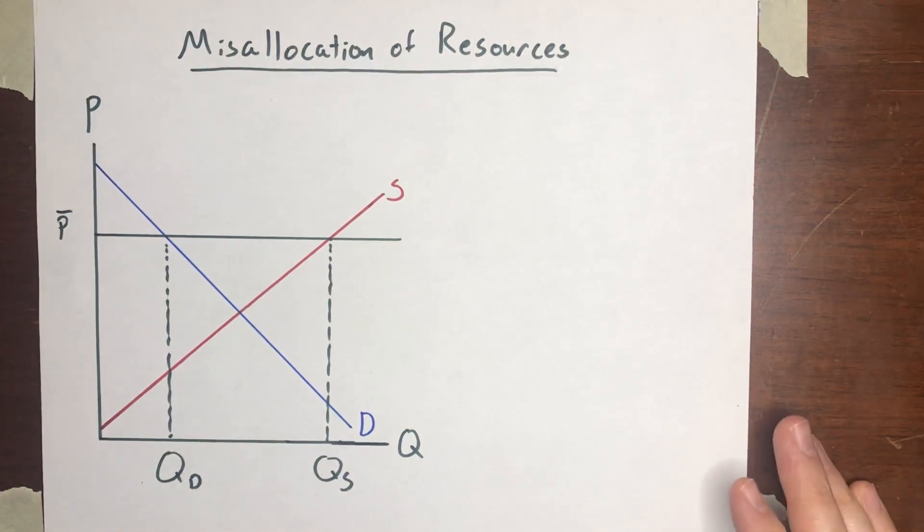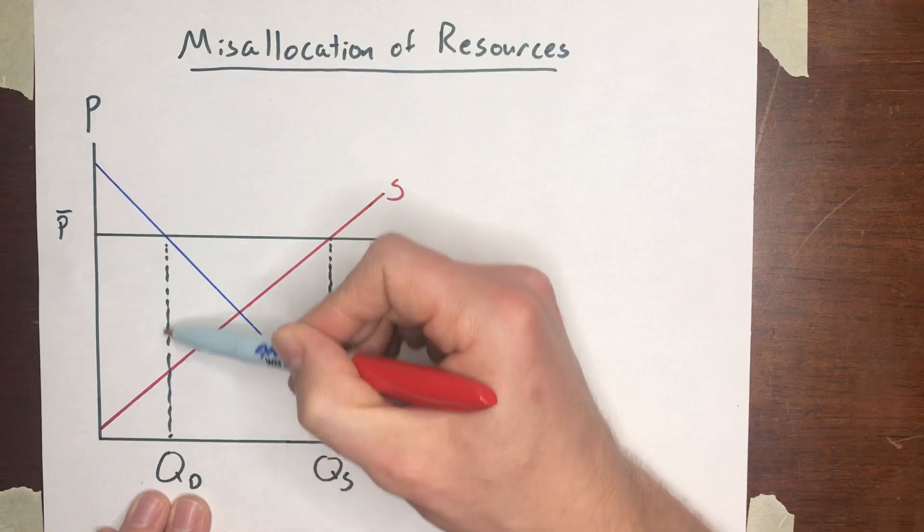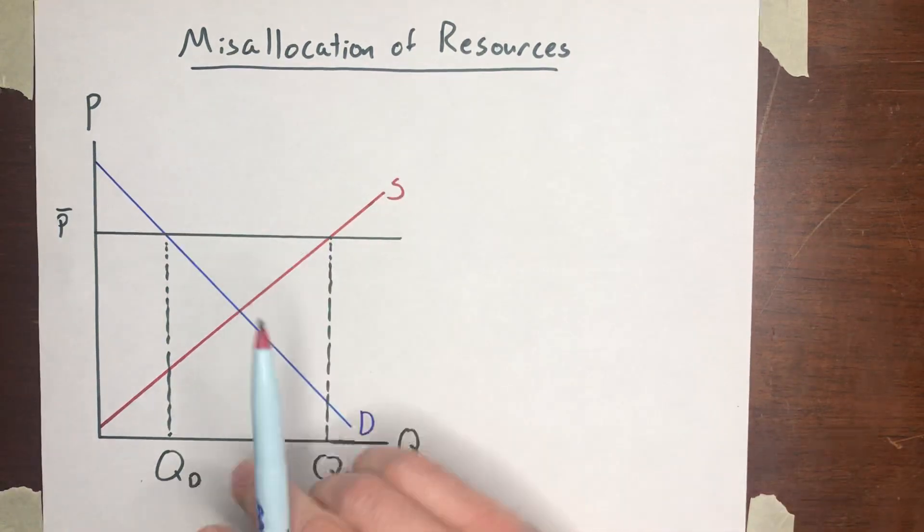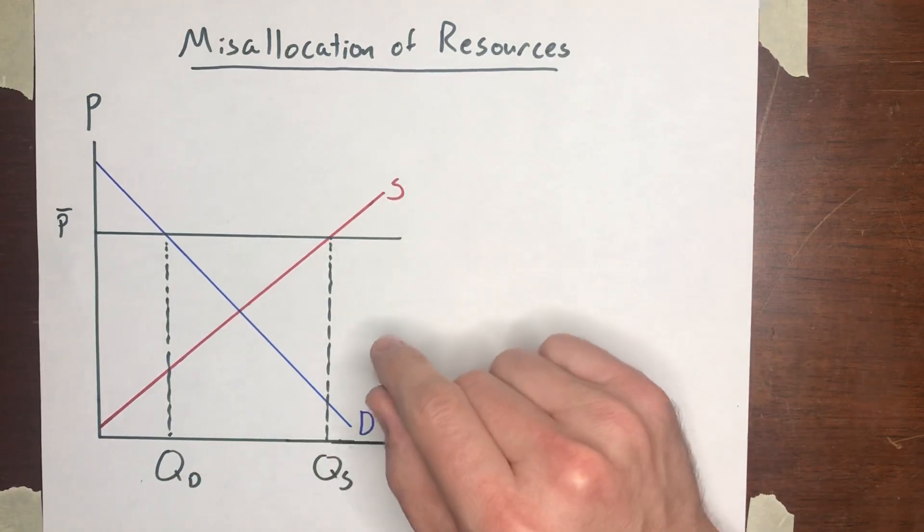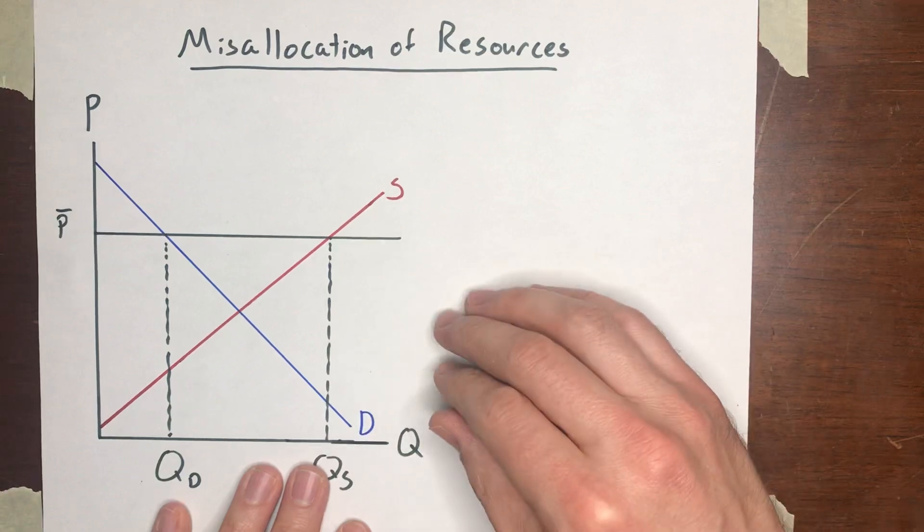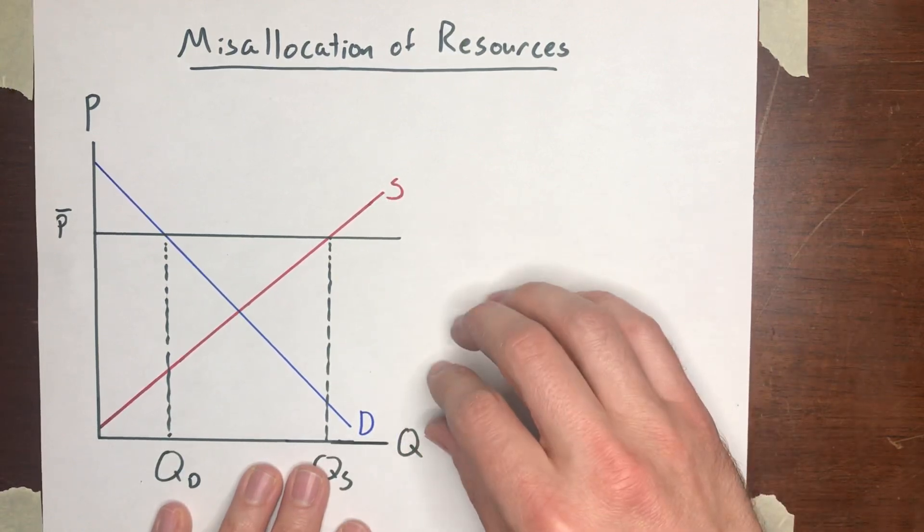In the last video, we talked about how the area between the supply curve, the minimum willingness to accept, and the price P̄ can all get eaten up by competition among sellers as they increase the quality of their goods and the cost of those quality upgrades exceeds the amount that buyers would be willing to pay for them.